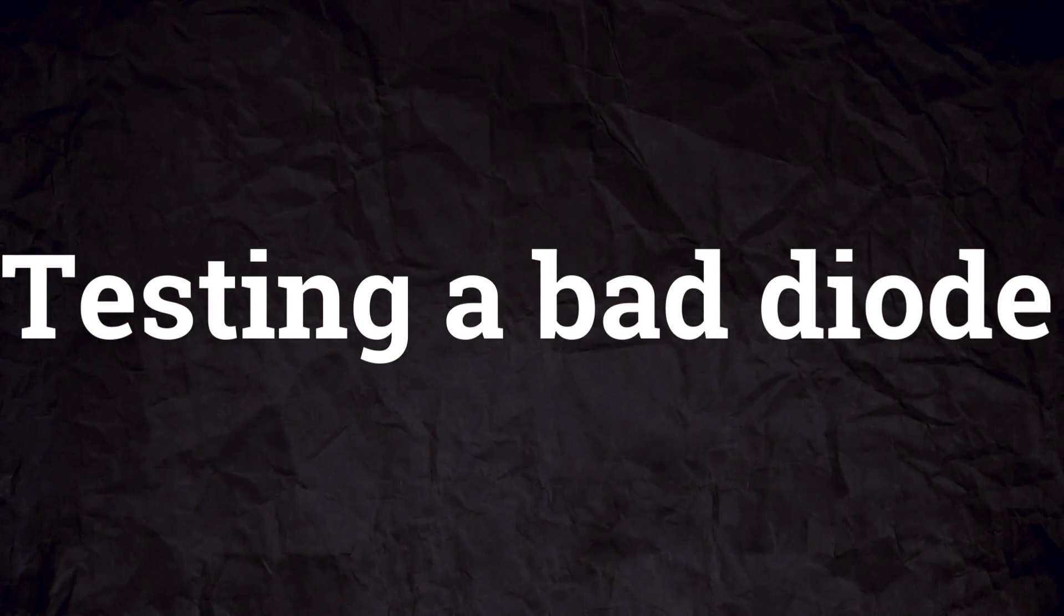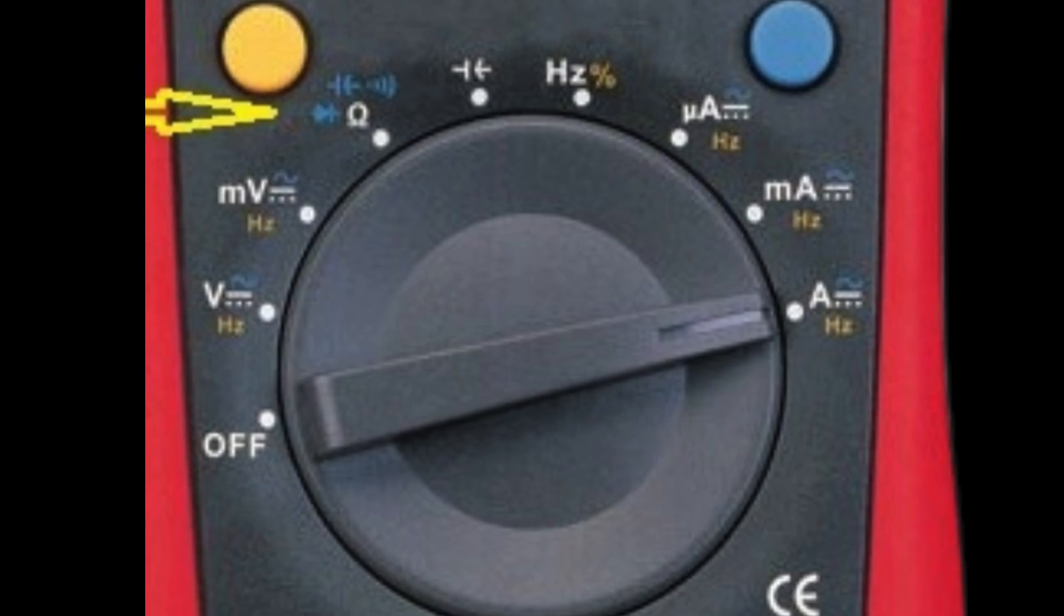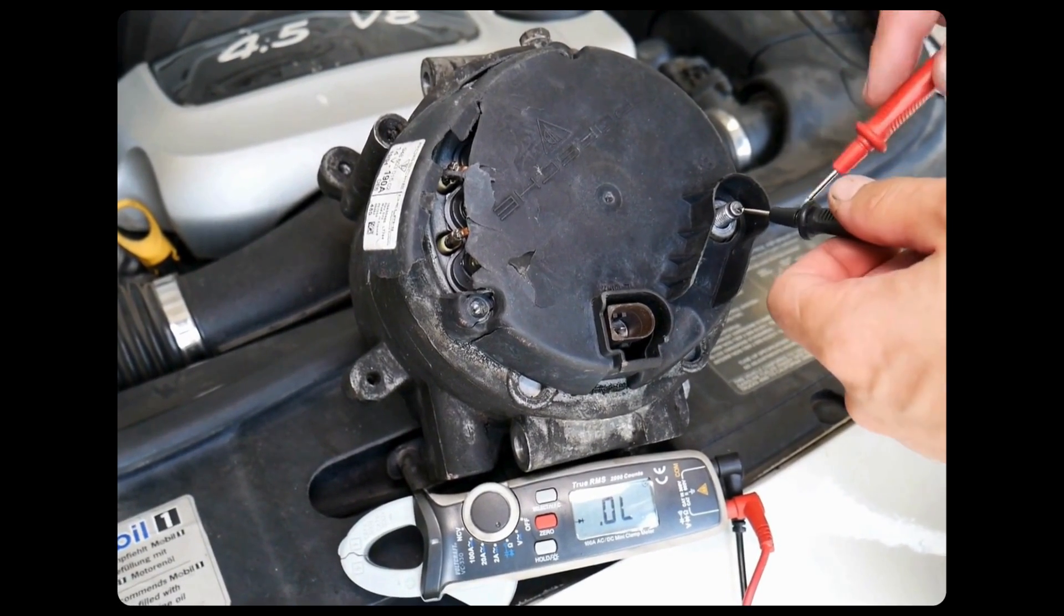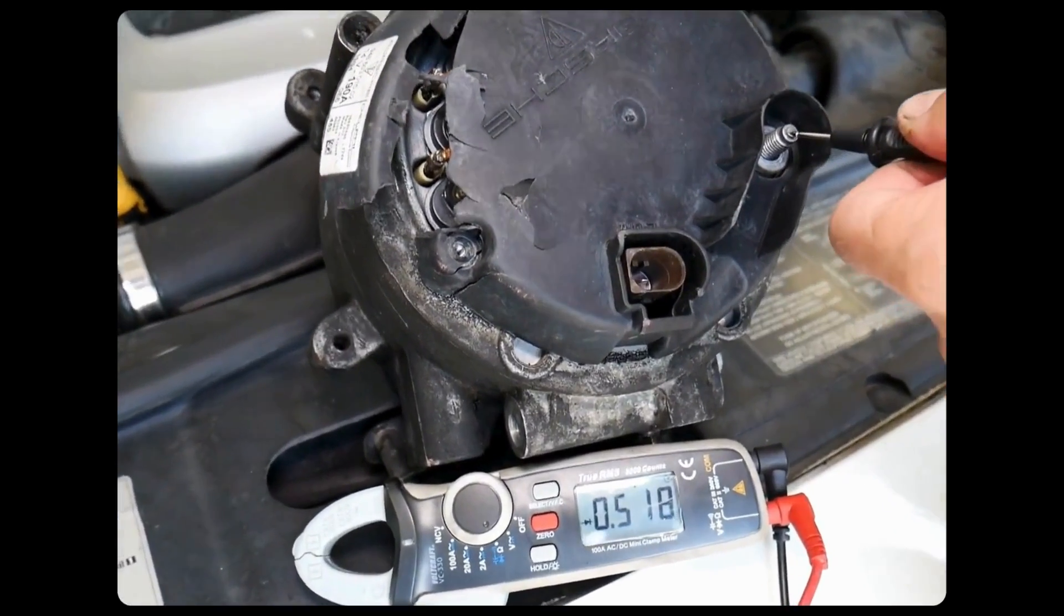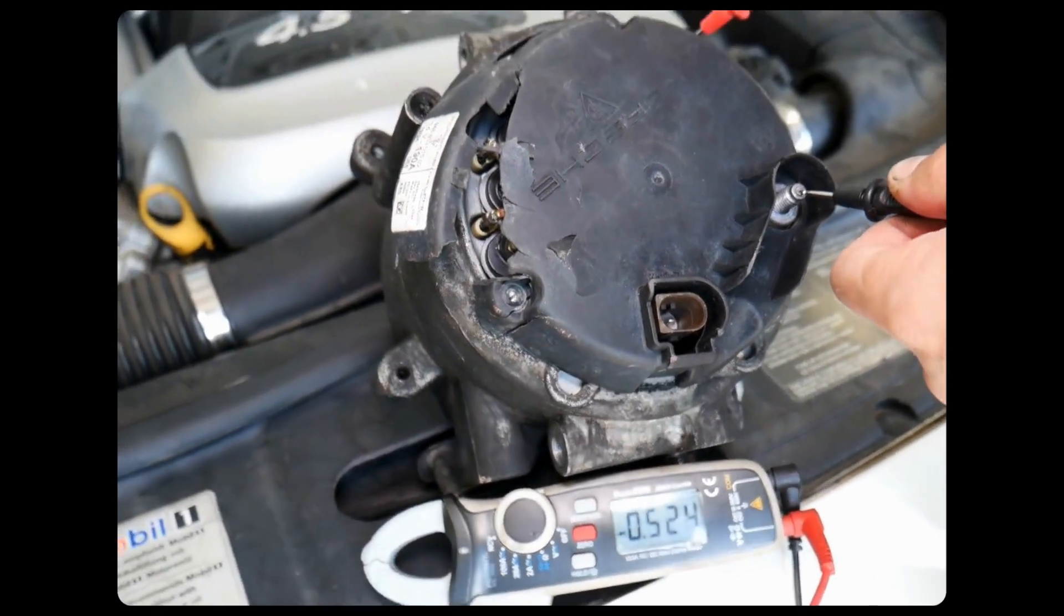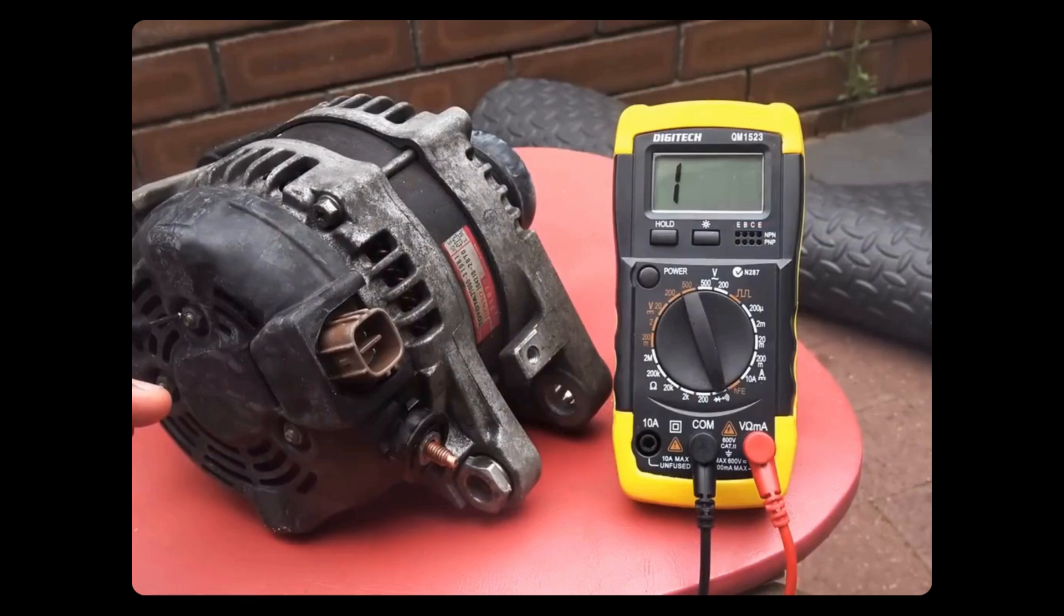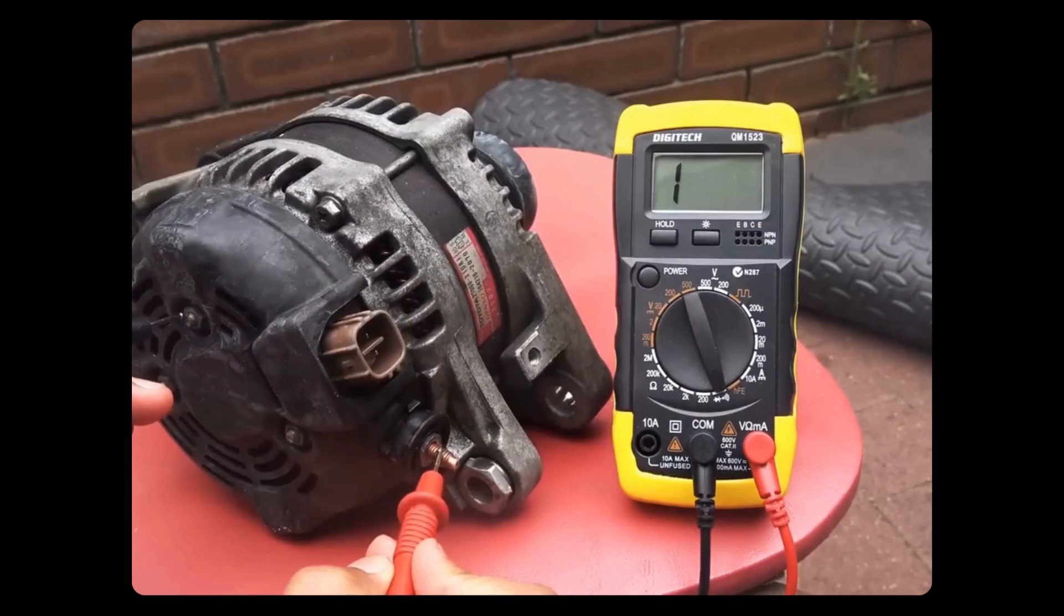To test bad diode, set the multimeter to the diode test mode. Connect the red multimeter lead to the alternator casing and the black lead to the B terminal of alternator. The reading should be between 500 and 800 millivolts. Now, if you reverse the multimeter connection, the reading should show overload.